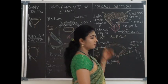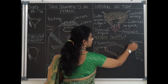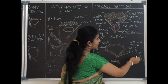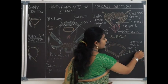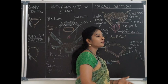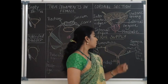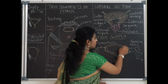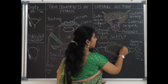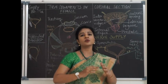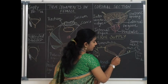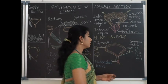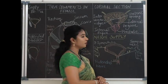The urinary bladder is supplied by sympathetic and parasympathetic nerves. The sympathetic nerve supply is called the nerve of filling — it allows the bladder to fill. It arises from spinal segments T11, T12, L1, and L2, forming the superior hypogastric plexus, with postganglionic fibers forming the right and left hypogastric nerves. Sympathetic action inhibits the detrusor muscle (allowing relaxation) and causes contraction of the internal sphincter, thus allowing the bladder to fill.